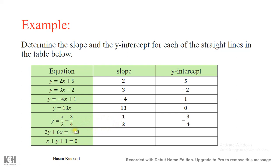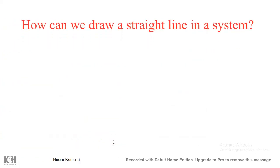For equations not already in slope-intercept form, isolate y on the left side and move all other terms to the right. Doing this, one equation gives y = −3x − 5, so the slope is −3 and y-intercept is −5. Similarly, another gives y = −x − 1, so the slope is −1 and y-intercept is −1.